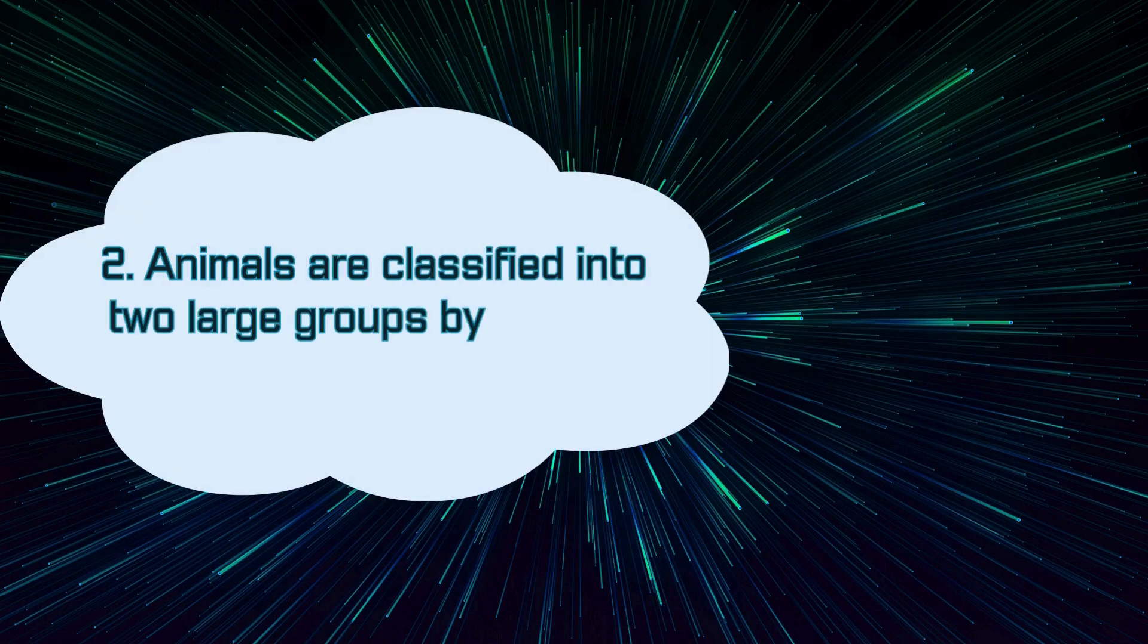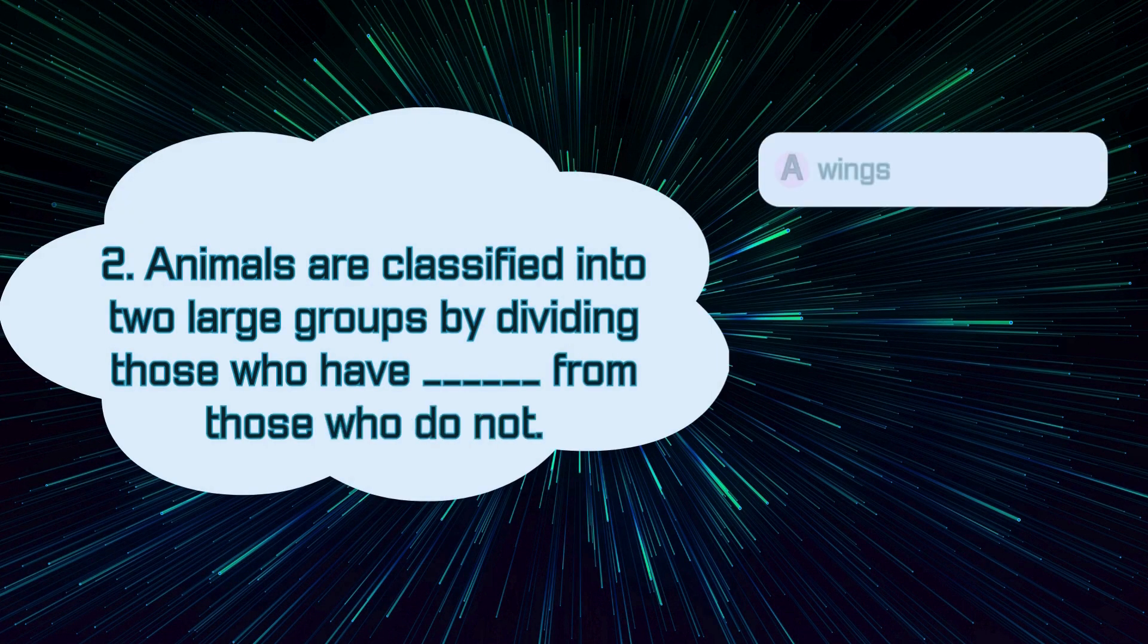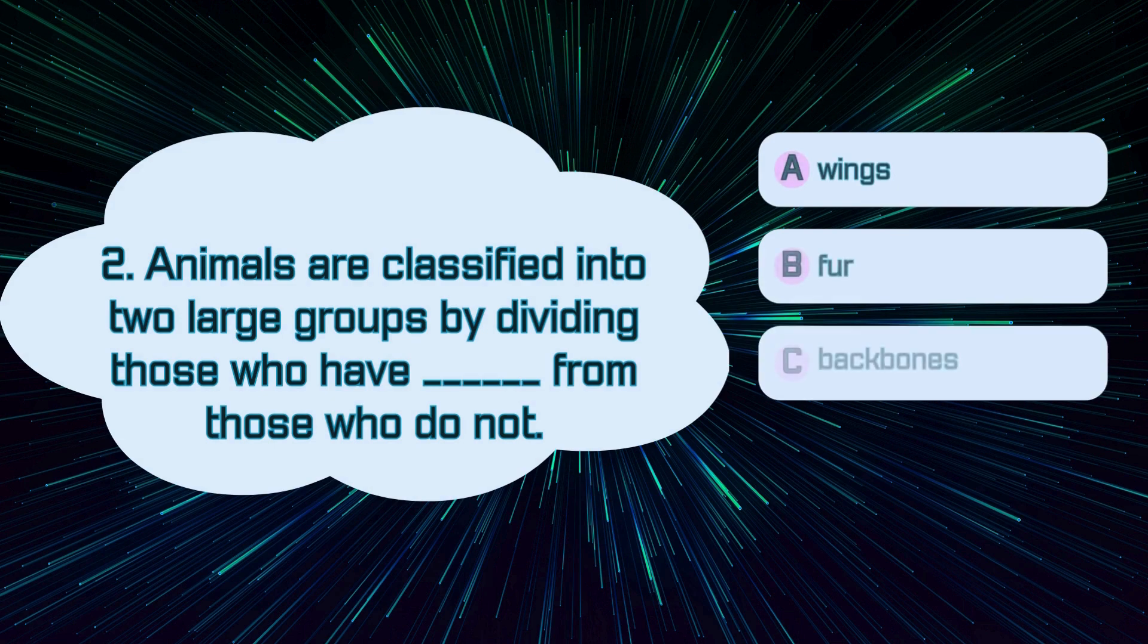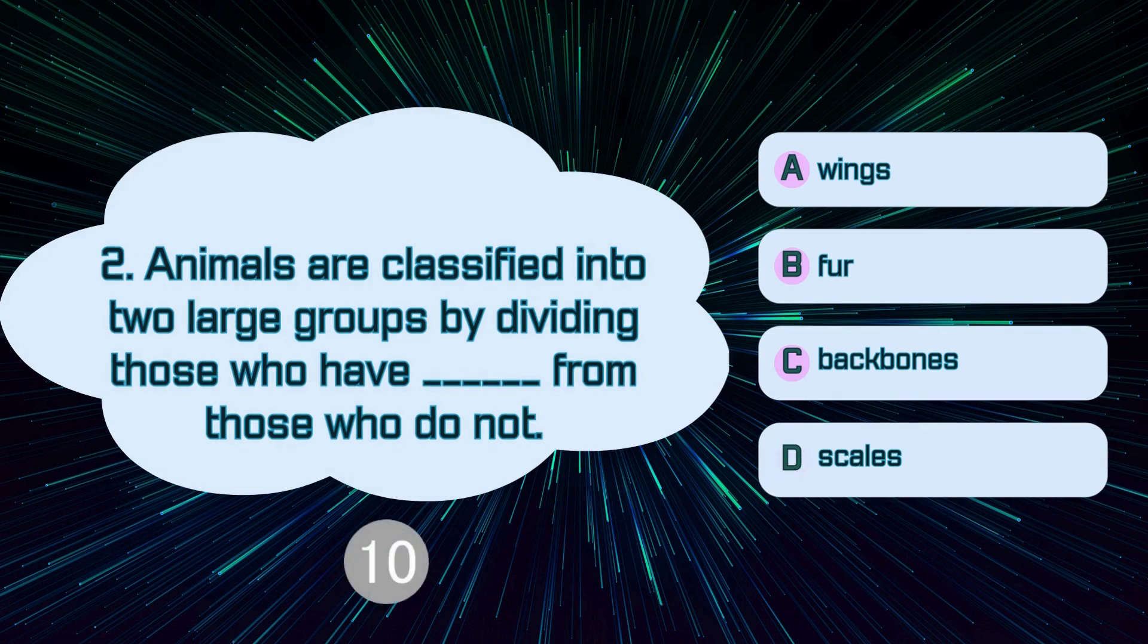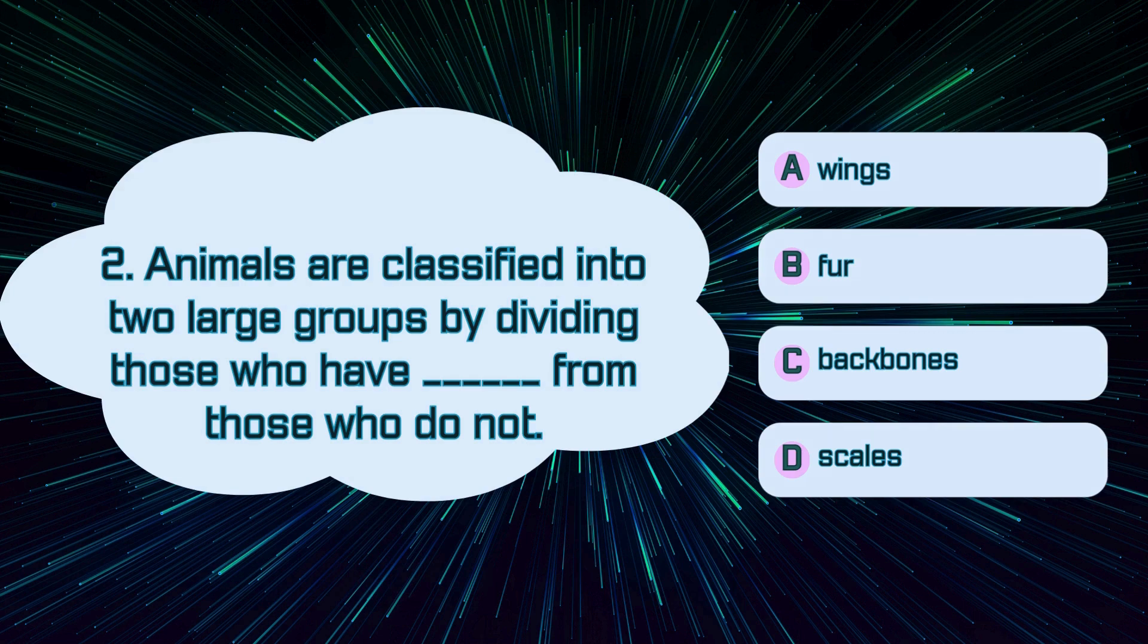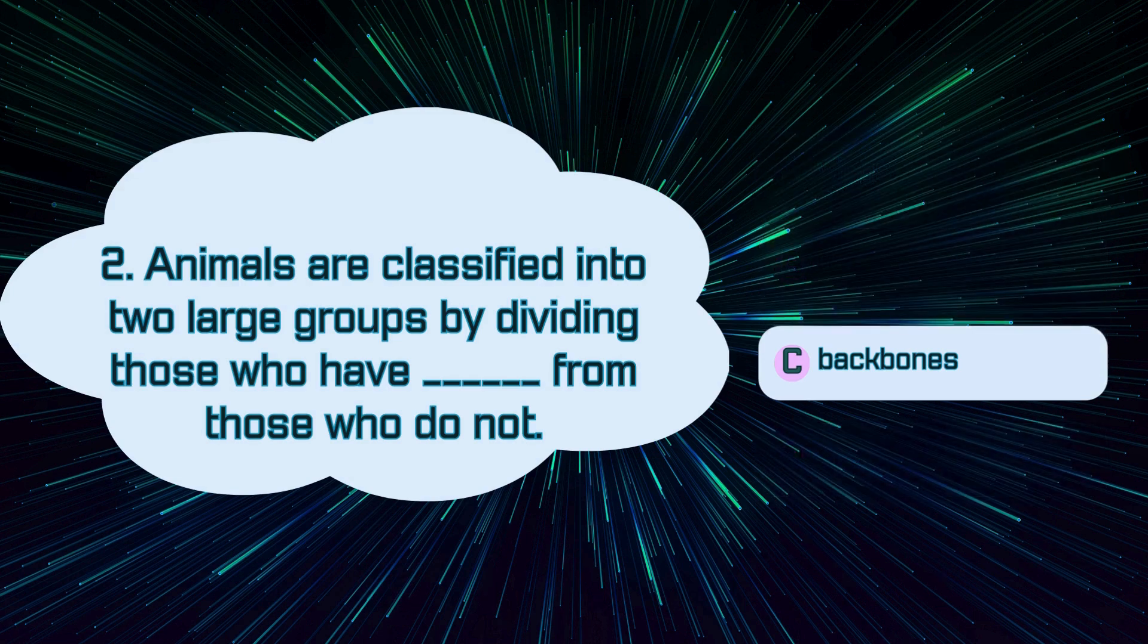Number 2. Animals are classified into two large groups by dividing those who have blank from those who do not. A. Wings, B. Fur, C. Backbones, D. Scales. The correct answer is C. Backbones.